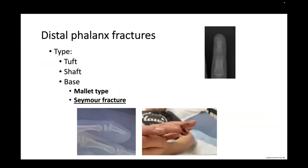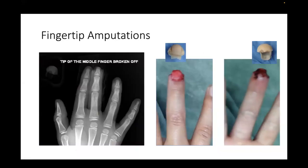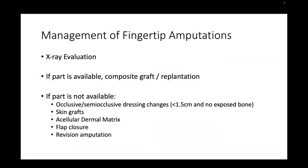Distal phalanx fractures can be described as tuft, shaft, or base fractures. With base fractures, it's important to think about Seymour fractures, as shown at the bottom of the screen. X-rays are helpful for looking for underlying fractures. With respect to management of fingertip amputations, x-ray is essential. If the part is available, consider composite grafting or replantation. If not, options include occlusive or semi-occlusive dressing changes, especially if less than 1.5 centimeters in size and there's no exposed bone.